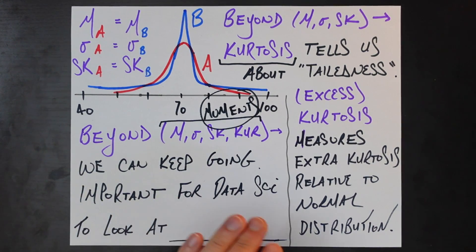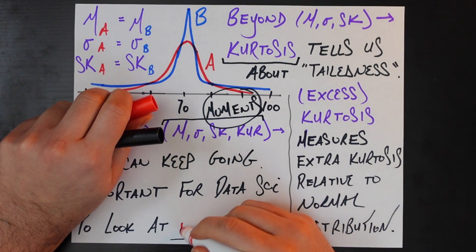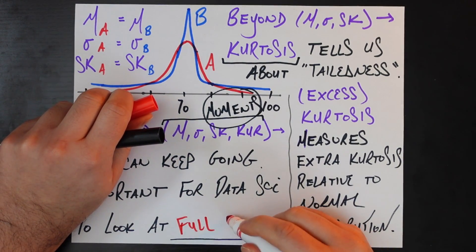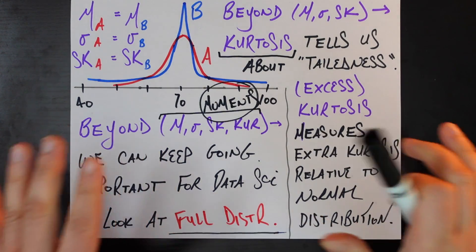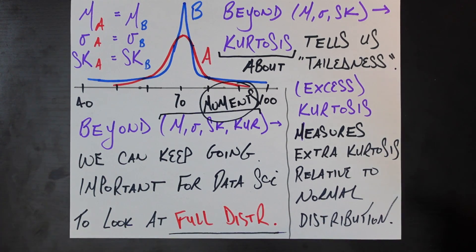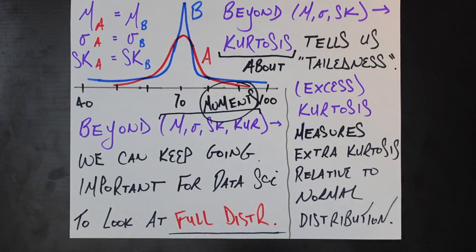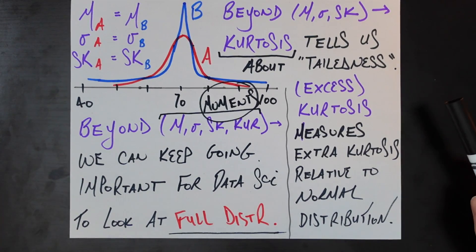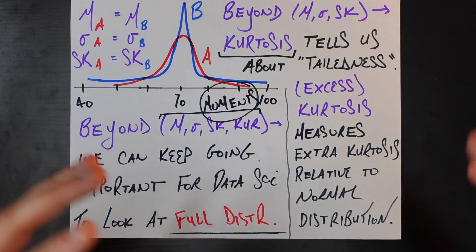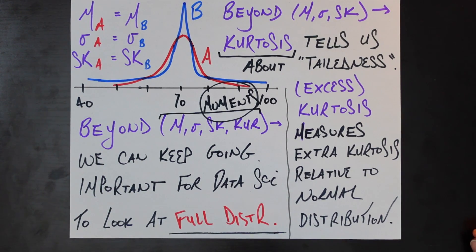But at that point, the important thing for data scientists is to look at the full distribution. Anytime you get a new set of data, I think the first thing you should do is plot that full distribution and think about what are some interesting features — are there multiple modes? Are there a lot of outliers? Does it have really fat tails relative to a normal distribution? Is it skewed to the left or right? Is there a lot of variance? And then report those summary statistics.